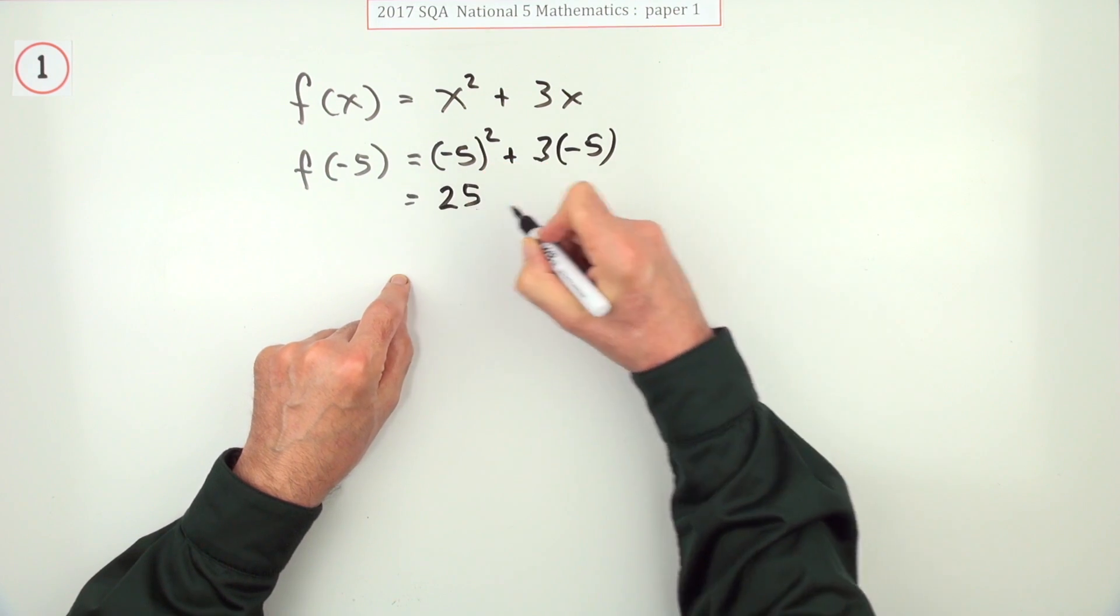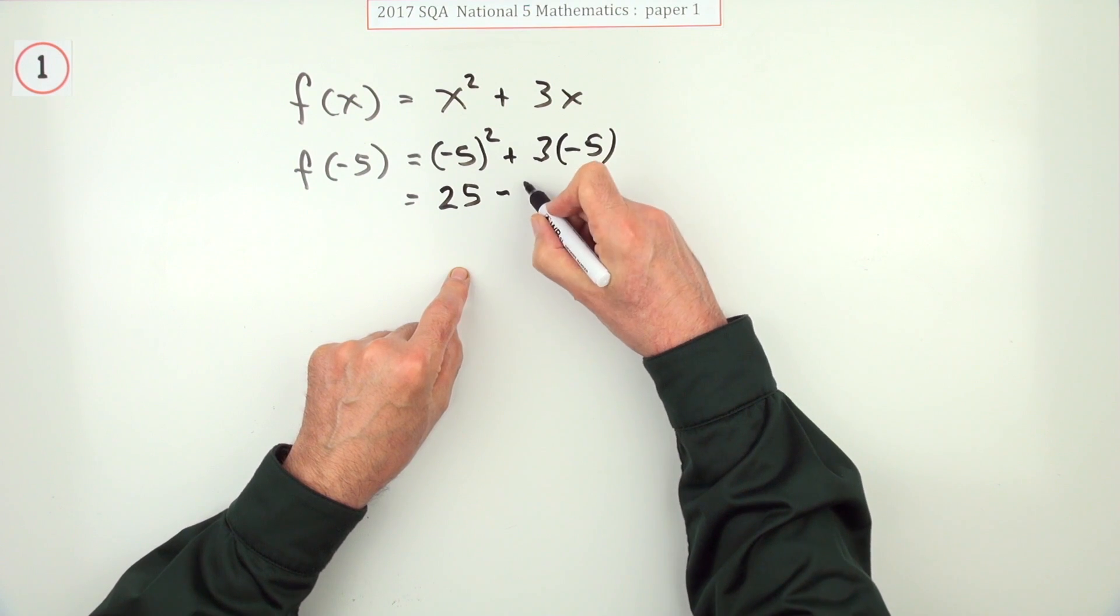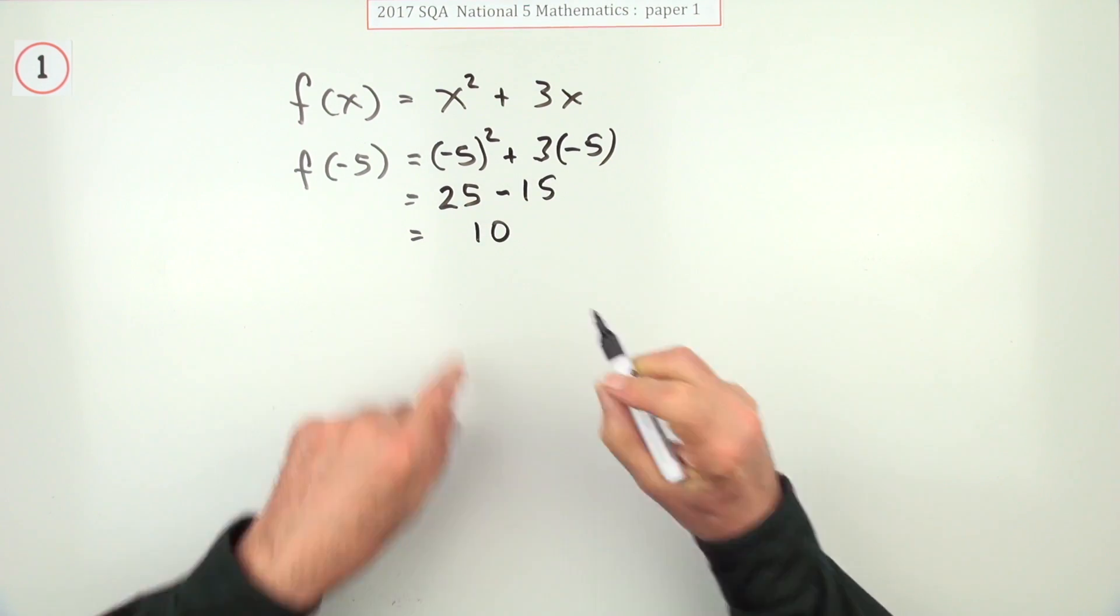And then just watch what you're doing. Negative 5 squared is a negative times a negative, that'll be a positive 25. A negative times a positive, that'll be minus 15. So the answer to that should be positive 10.